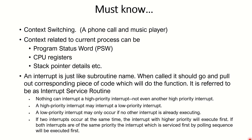An interrupt is just like a subroutine or function. When called, it goes and pulls the corresponding piece of small code that performs certain activities — this is called the interrupt service routine (ISR). Interrupts can be of higher or lower priority, and they can be maskable or non-maskable. These terms will be clarified shortly with an 8085 example.